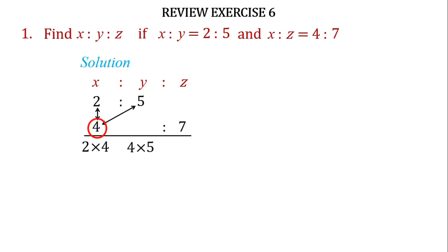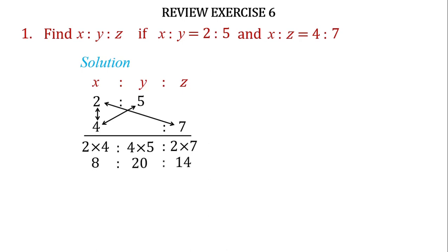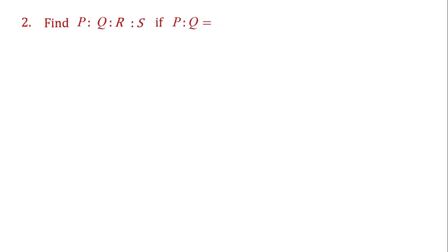Now write the ratio for Y — it is 4 × 5. Then write the ratio for Z — it is 2 multiplied by 7. Now solve it and get the value of X, Y, and Z. Question number two is very easy; try to solve it by yourself. Hope you will solve it, and for your ease I am solving it here also.